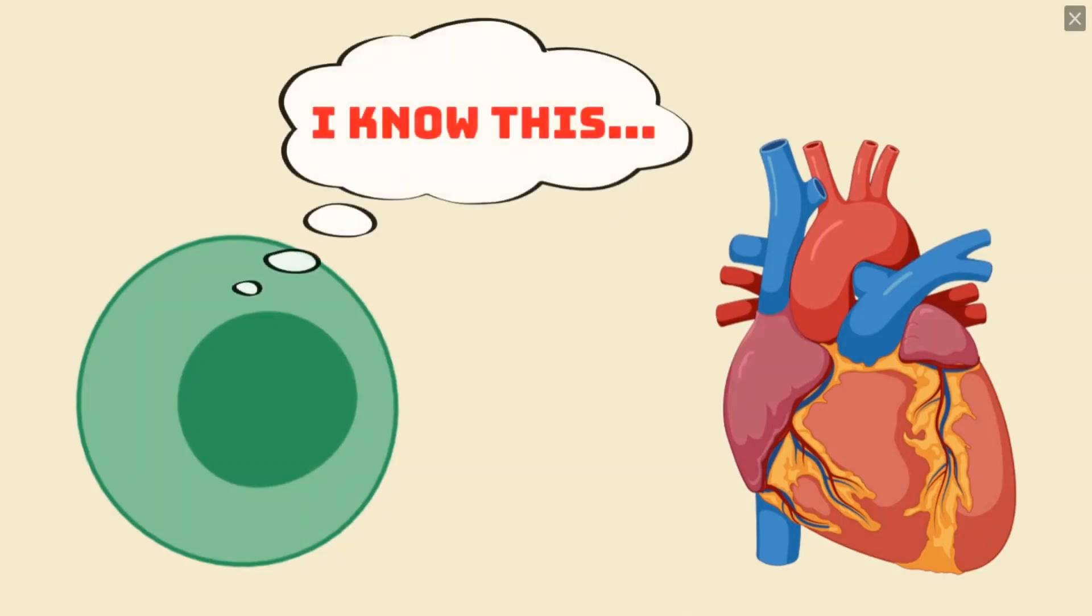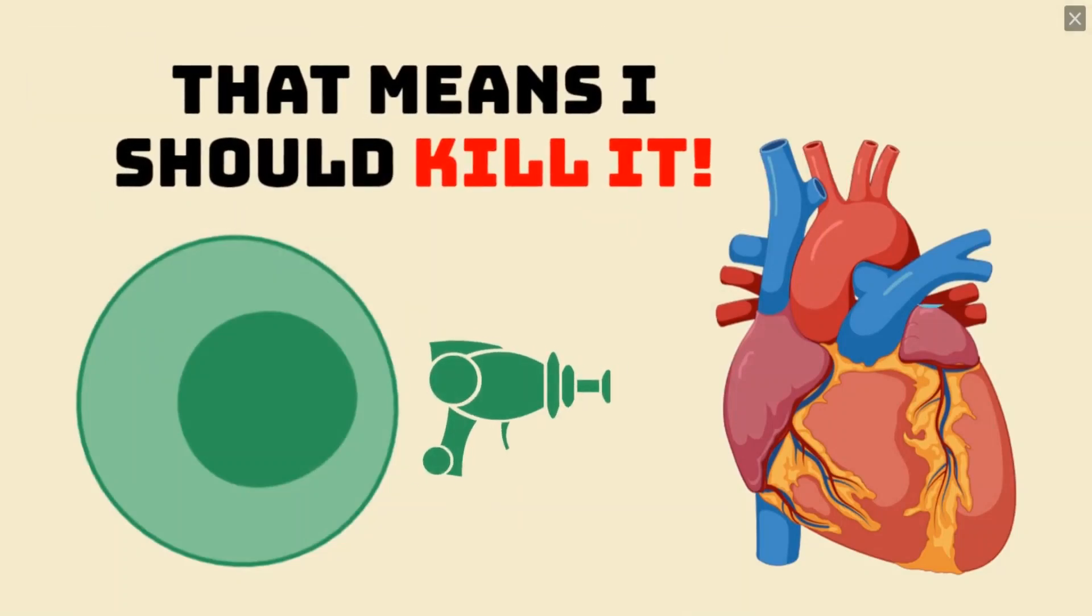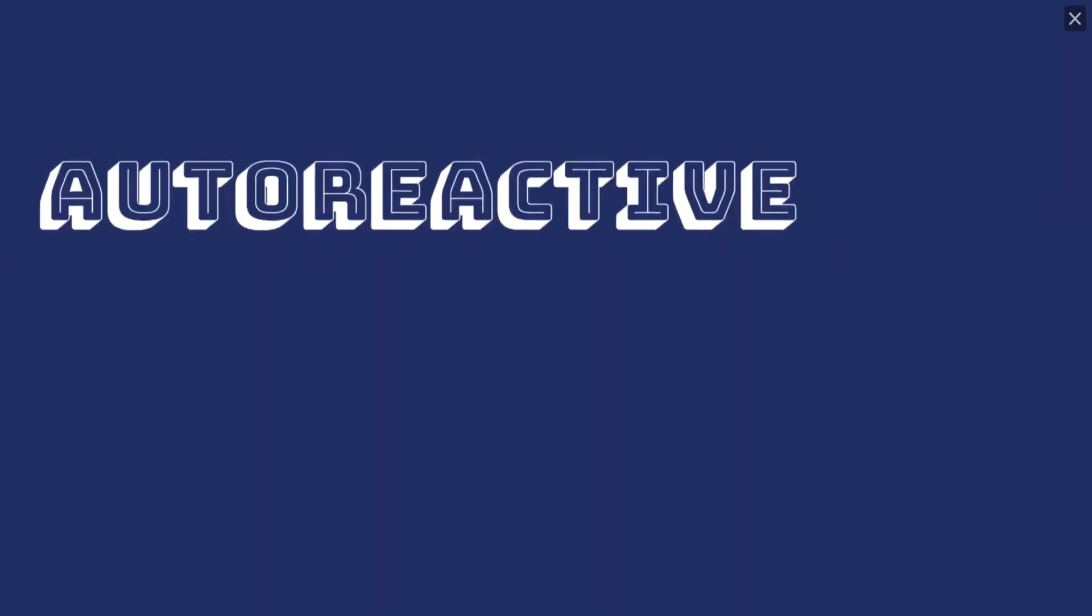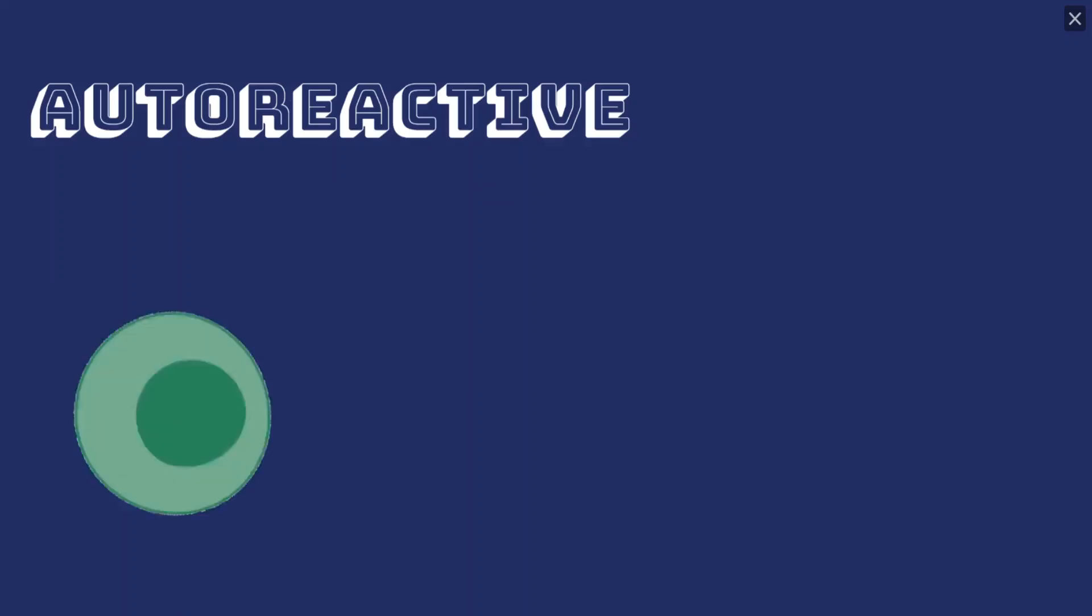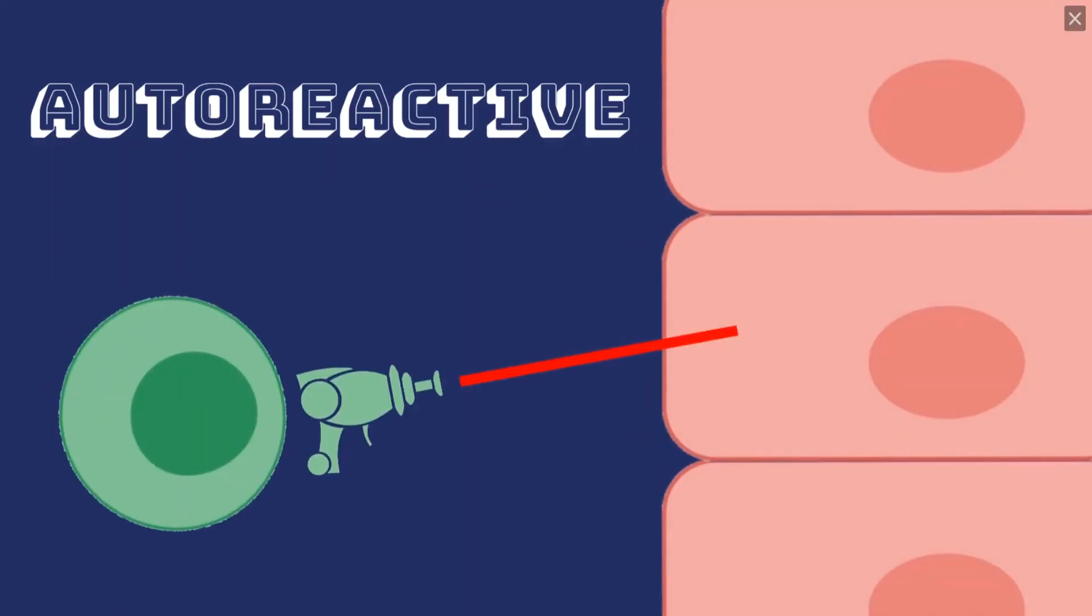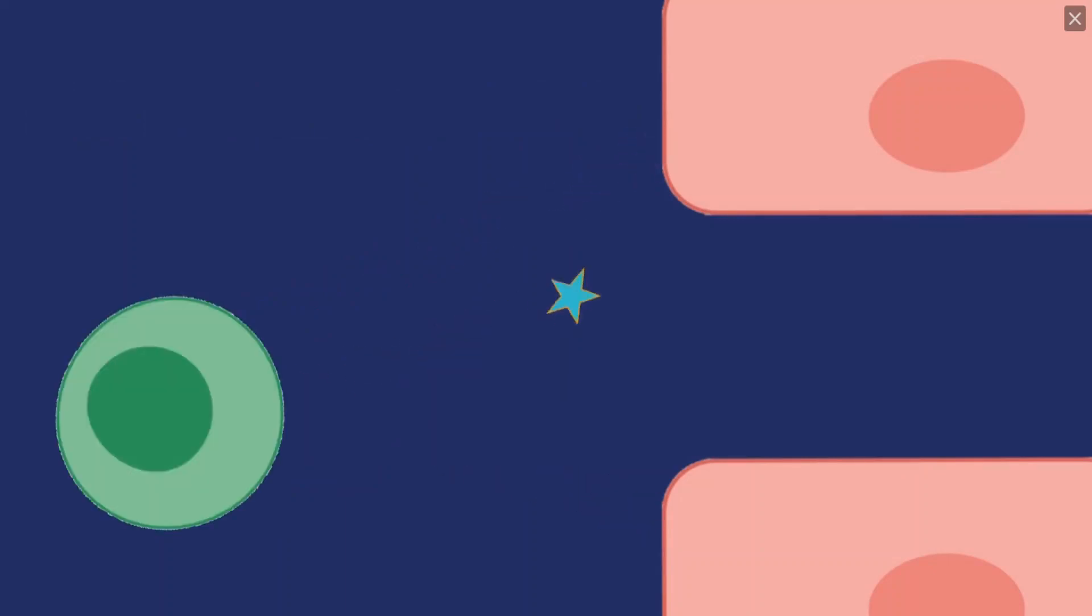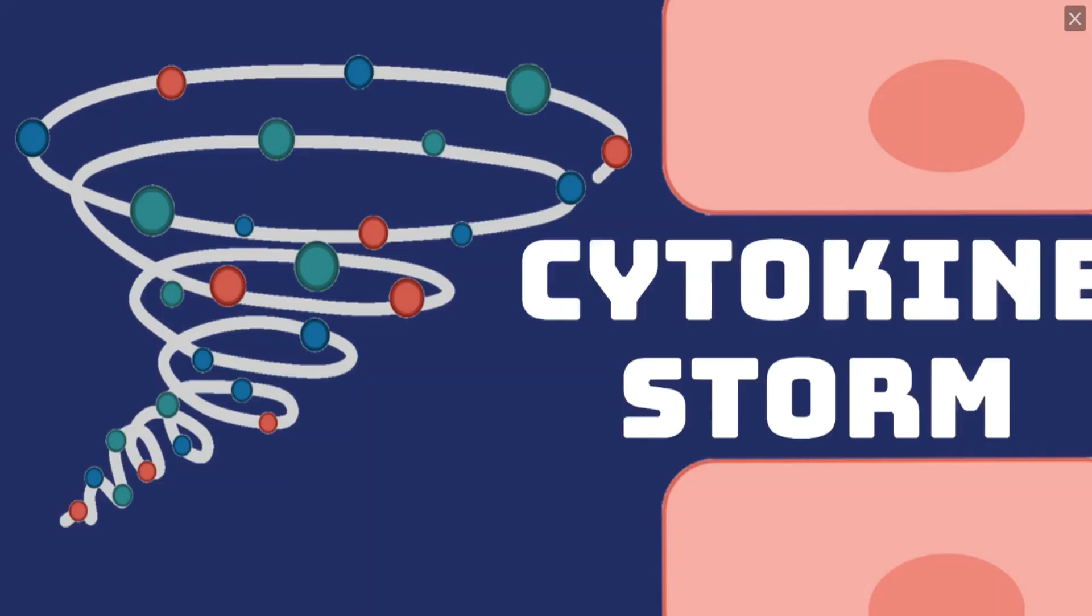Some of you may also be wondering that since the receptors can bind to anything, wouldn't some cells make receptors that react to parts of our own body? And to that we say, you're right! When newly made, many B and T cells are known as autoreactive, and can bind to and damage our own bodies. Not only will our own cells be targeted, but the release of cytokines, as well as the ensuing inflammation and immune response, may cause a cascade of problems known collectively as a cytokine storm.